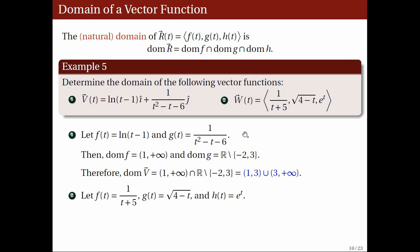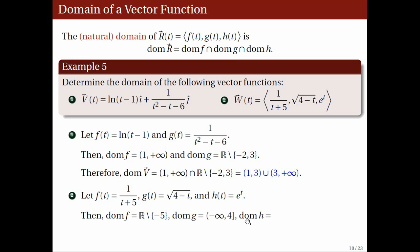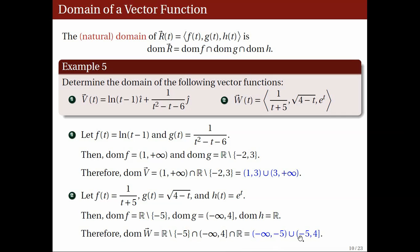For vector function w, we have the following component functions. The domain of f is all real numbers except negative 5. For g to be defined, 4 minus t should be non-negative, so t is less than or equal to 4, giving domain (−∞, 4]. The function h is the natural exponential function, so its domain is all real numbers. The domain of w is the intersection of these three sets, which means removing negative 5 from (−∞, 4], giving the union (−∞, −5) union (−5, 4].